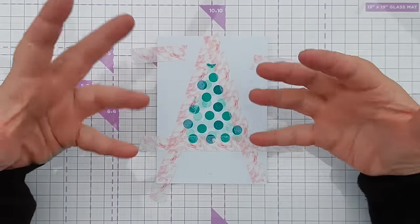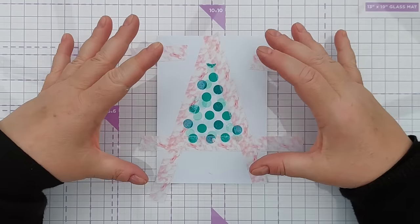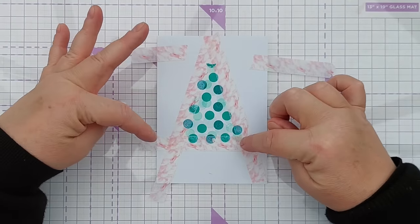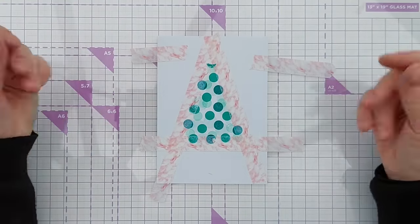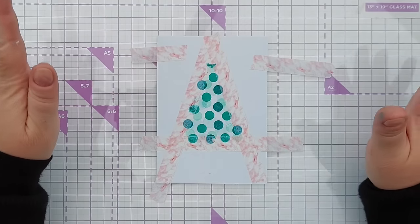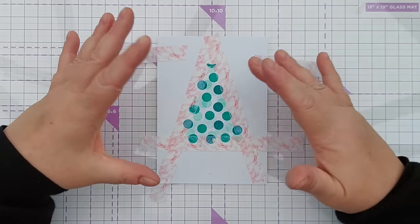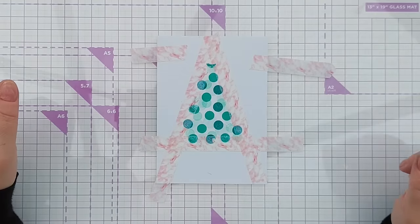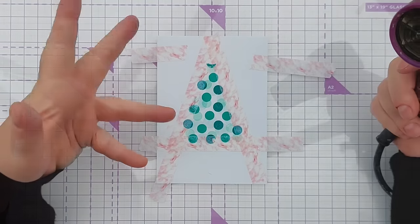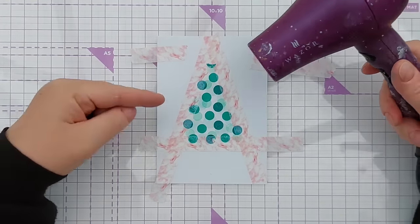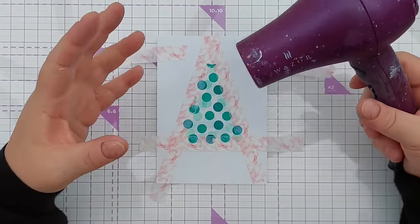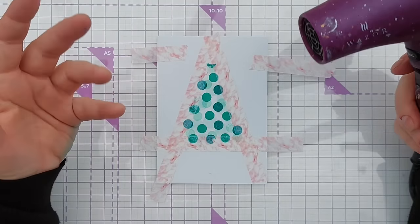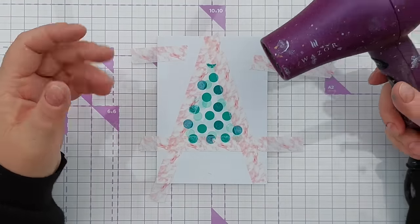Now the ink will have soaked in and is starting to dry on the card but it's still wet on the washi tape because the washi has a waxy coating, so I need to be really careful when removing the tape not to smudge the ink that's on the tape. To help me with the tape removal I'm going to warm the tape with my hair dryer. That will reduce the chances of ripping the paper and make it a little bit easier to remove.